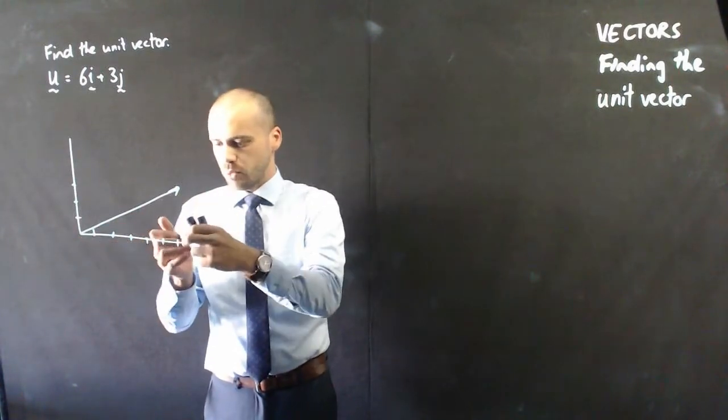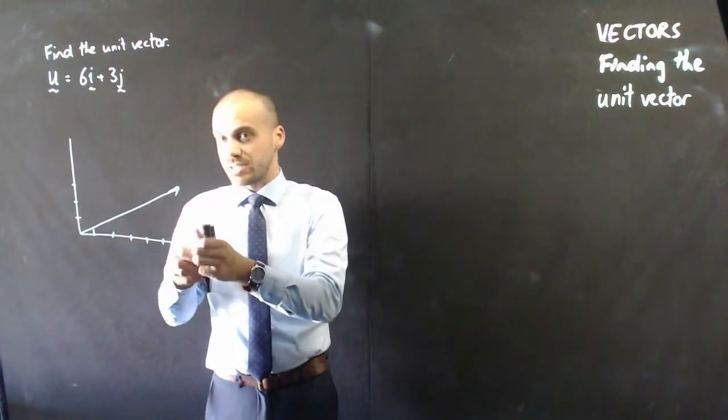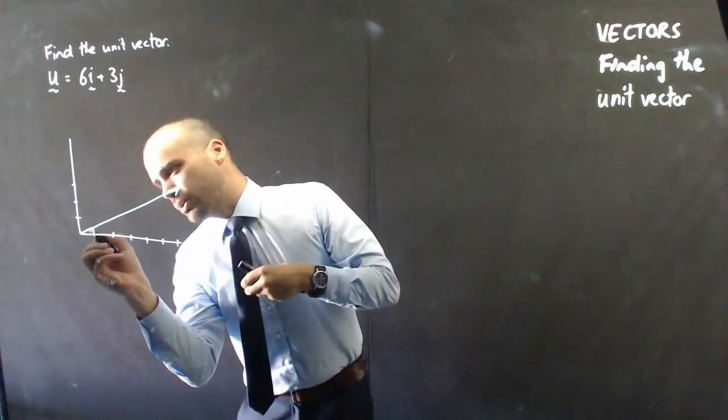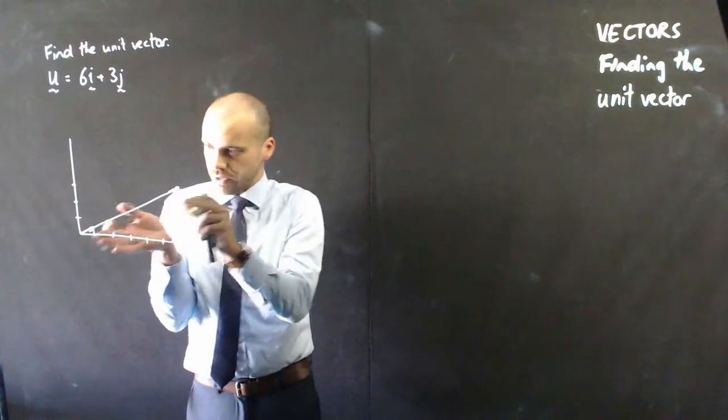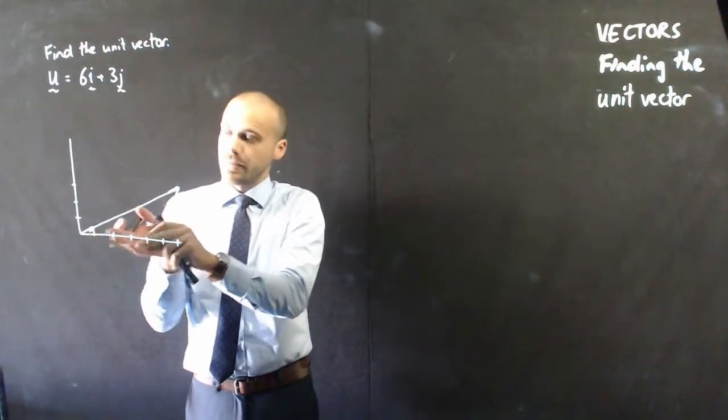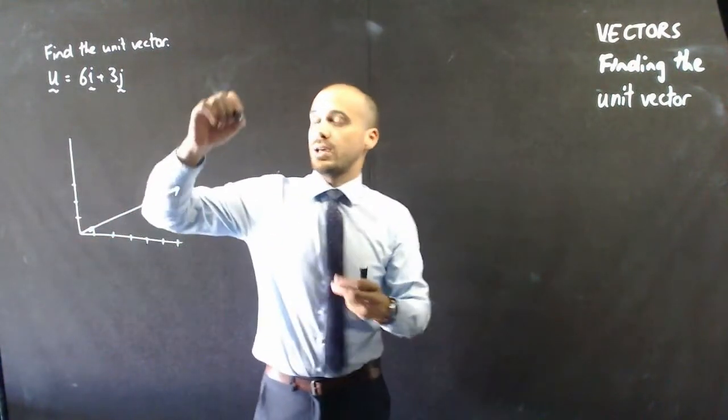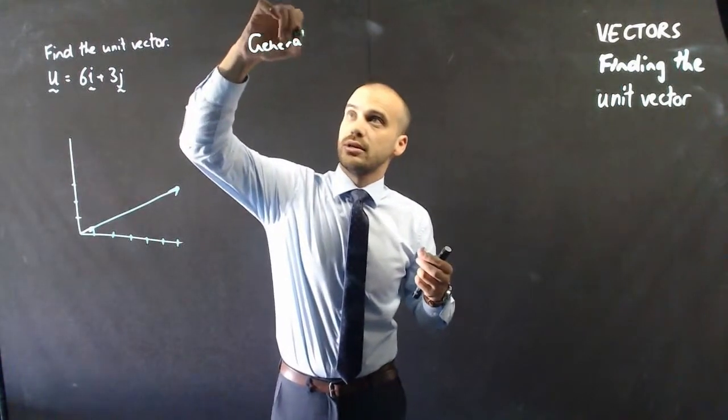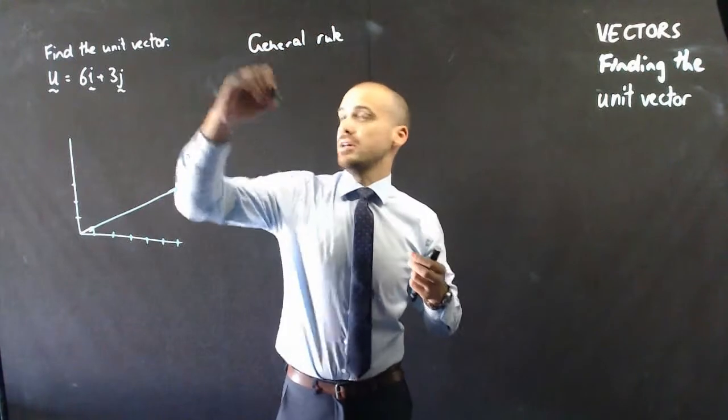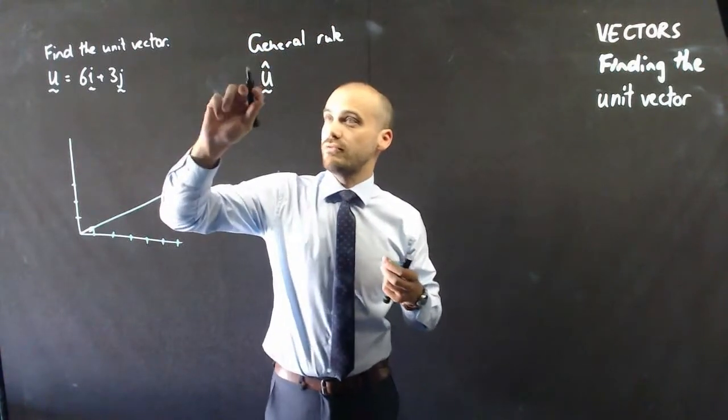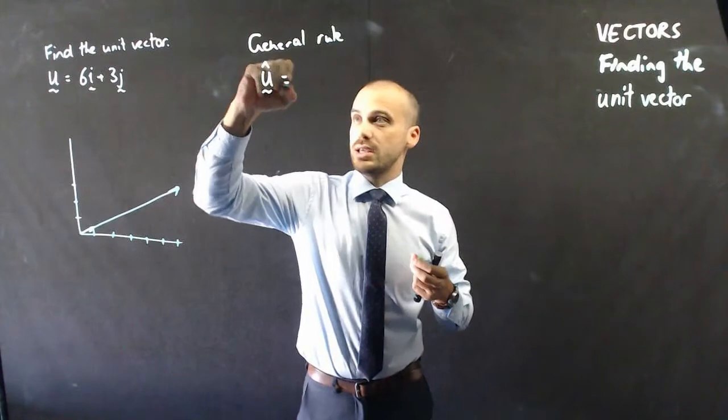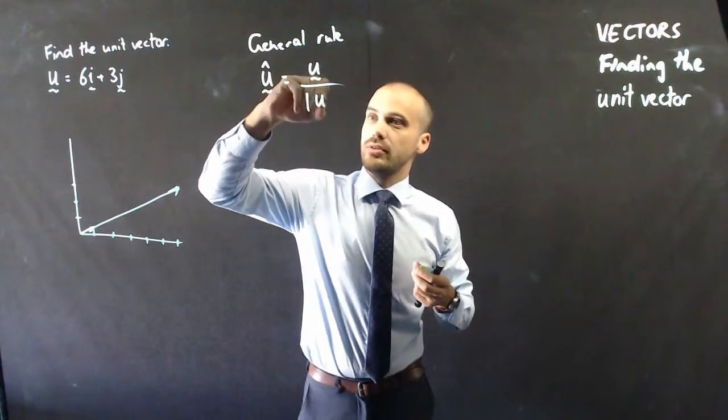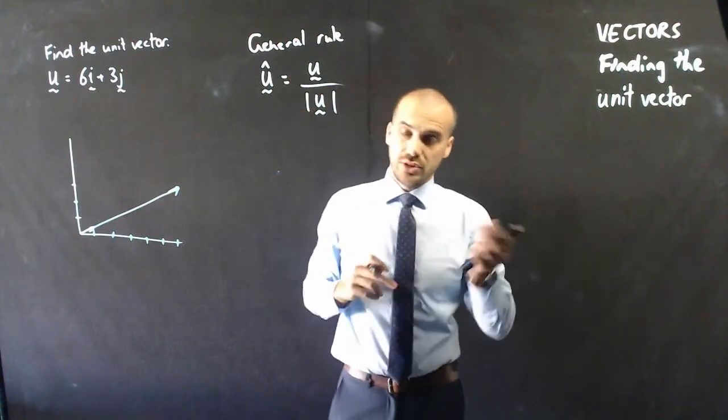That's about how long it is. And what we want to do is find a scaled down version that moves in the same direction, but only has a magnitude of 1. Now, the general rule is to say that the unit vector of u is equal to the vector u divided by the magnitude of vector u.